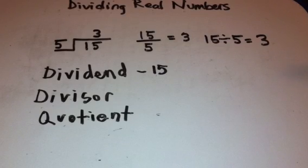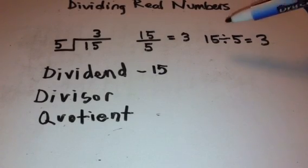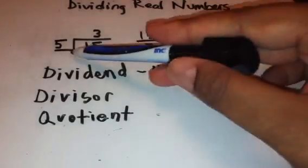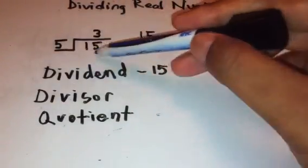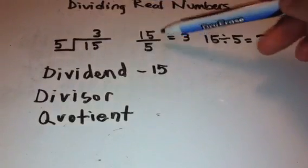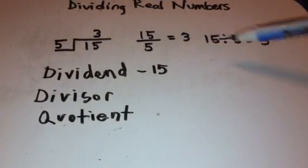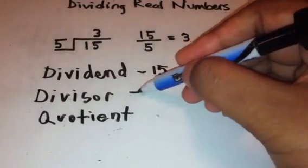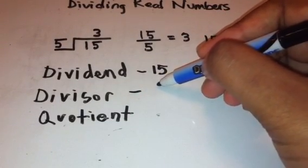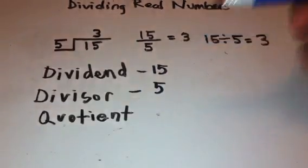Well, what's our divisor? Our divisor here is 5 because 5 is the number that we are putting inside of 15. And here when we put 5 into 15, 3 times, it goes in 3 times. So our divisor is 5.